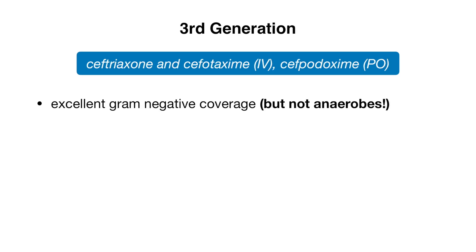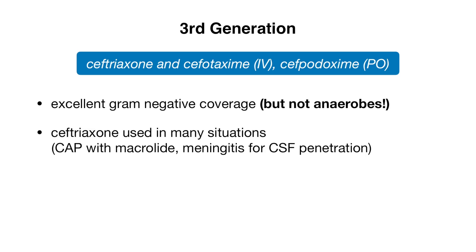Third generation antibiotics include ceftriaxone, cefotaxime, and cefpodoxime. These offer excellent gram-negative coverage, but remember — not anaerobic coverage. Of the three, ceftriaxone is used most often because it is used in many situations, such as community-acquired pneumonia along with a macrolide, as well as meningitis due to its CSF penetration.